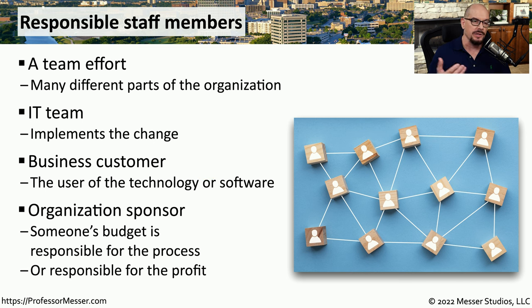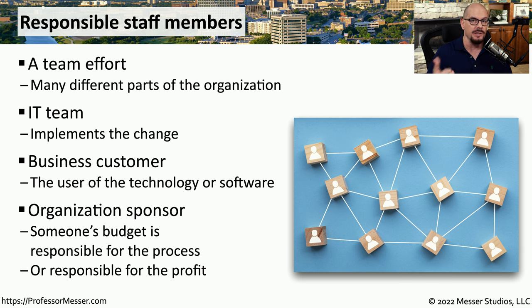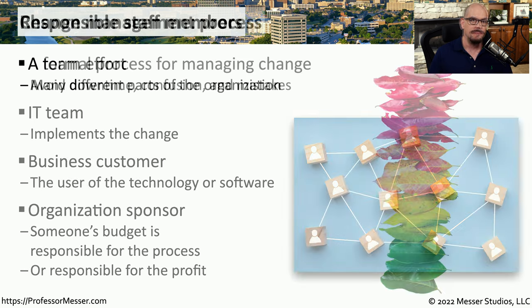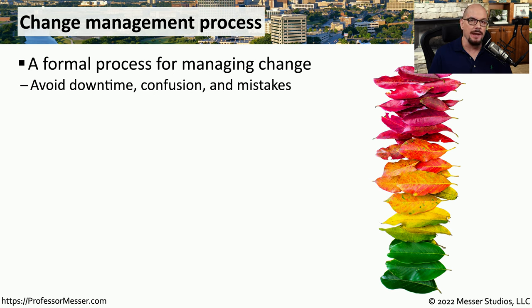The business customer is using the application and relying on IT to implement the change on their behalf. Overseeing all of this is usually an organization sponsor — the part of the company responsible financially for making this change, either paying for it or profiting from it once implemented. A formal change control process helps avoid or minimize downtime, avoid confusion between different parts of the organization, and avoid mistakes because the right people weren't informed.